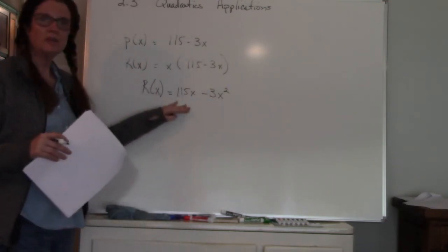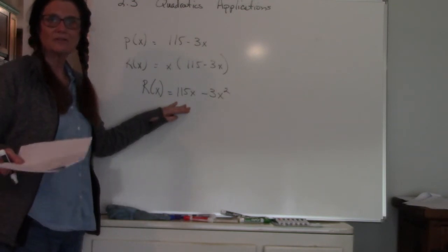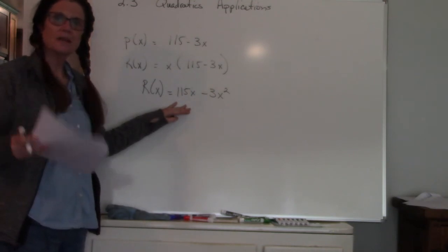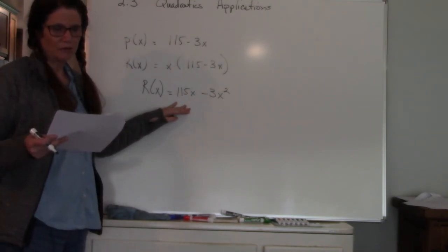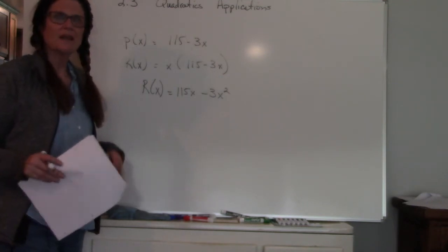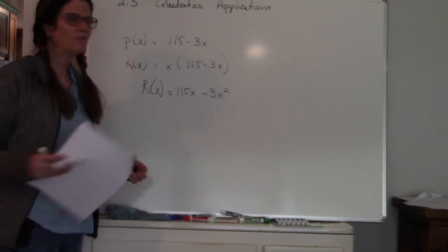Now I'm going to use either completing the square or the vertex formula to find my vertex. So remember the X value is the number of items, so if the question says find the output that will produce the maximum revenue, well what that means is how many items do I need to produce in order to reach my maximum revenue.